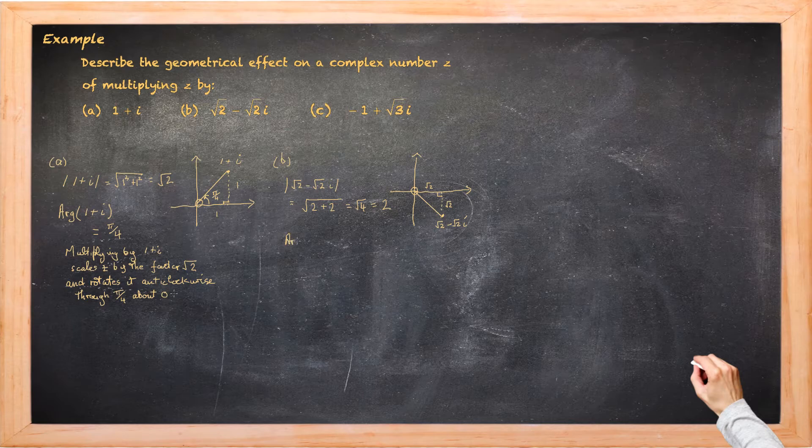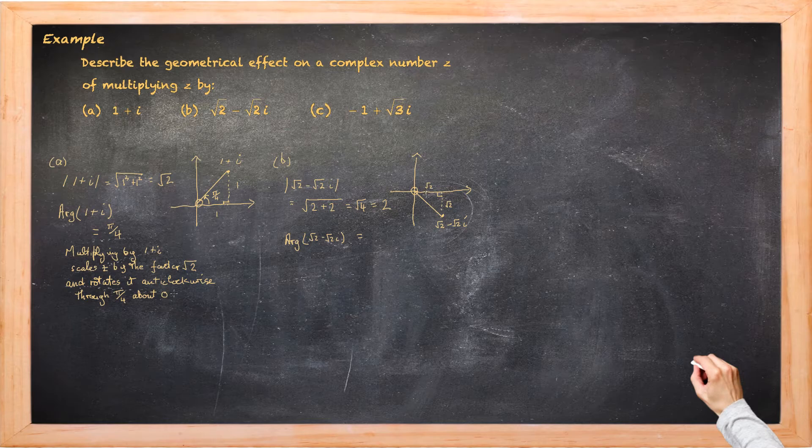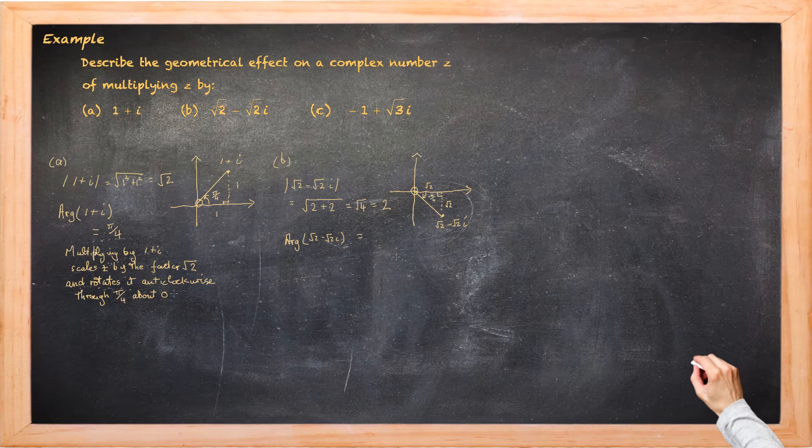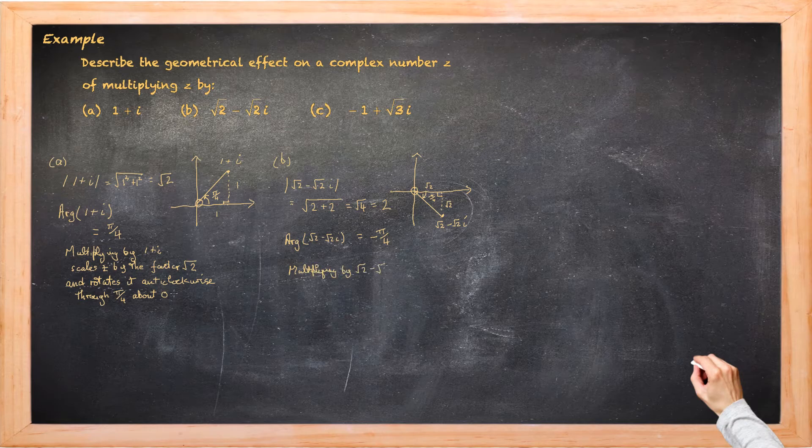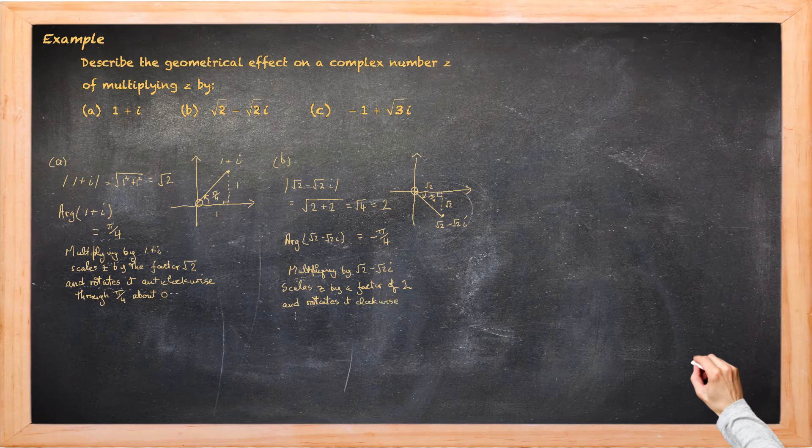And let's have a look at the principal value of the argument of root 2 minus root 2i. And again the diagram will help us out. In this case we've got an angle of minus pi upon 4. So what does it mean? It means when we multiply by root 2 minus root 2i we're scaling z by a factor of 2 and we're rotating it clockwise through pi upon 4 about the origin.